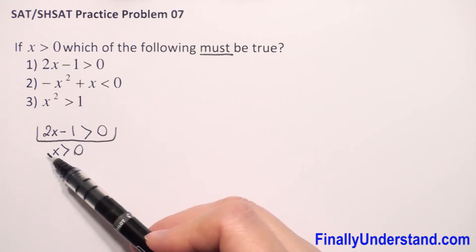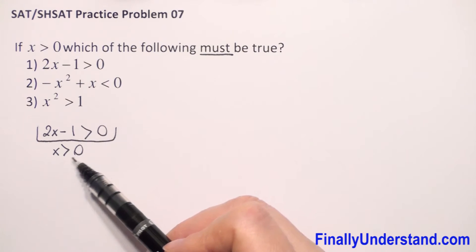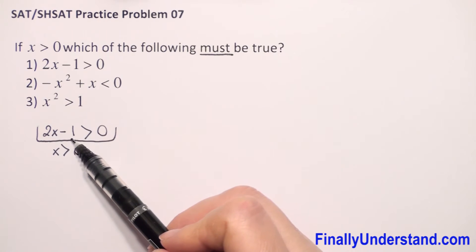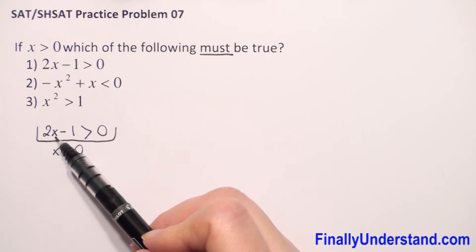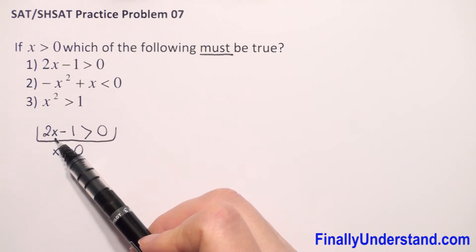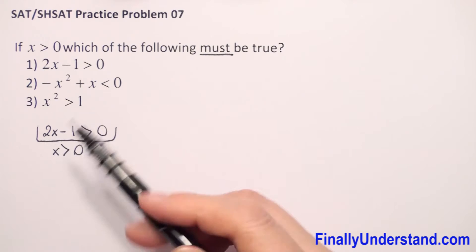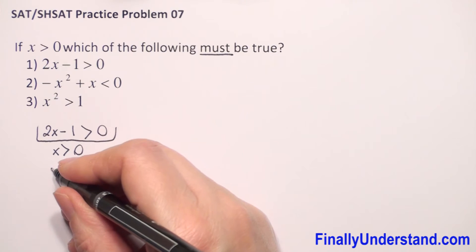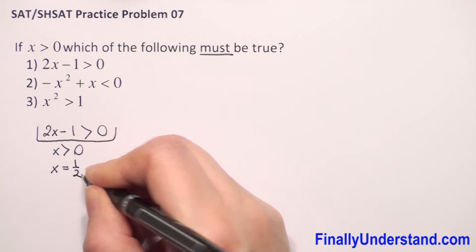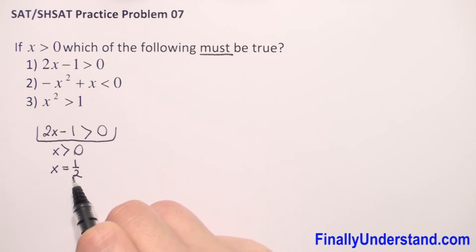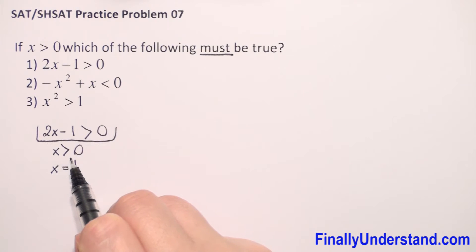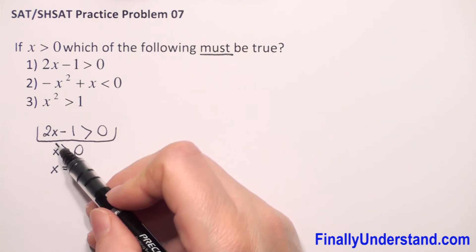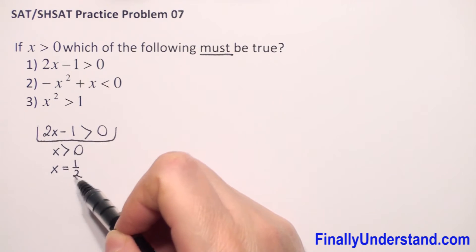Let's see what we can take for x. x must be greater than 0. Because we have 2x minus 1 on the left side, let's take x equal to 1/2. We can take x equal to 1/2 because 1/2 is greater than 0. Now we substitute x by 1/2 into our inequality.